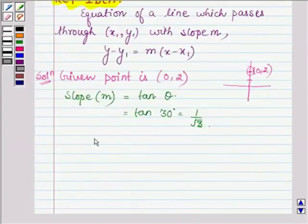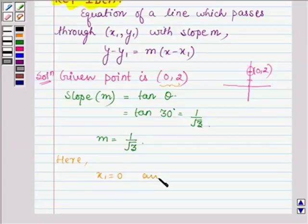So, the slope of the line is 1/√3 and the given point is (0, 2). This implies x₁ = 0 and y₁ = 2.